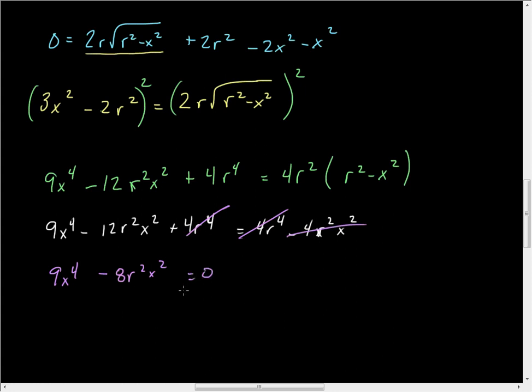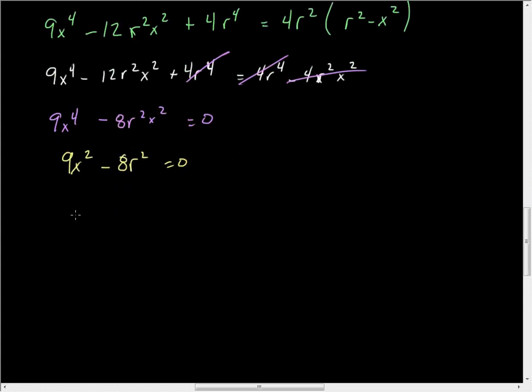Dividing through by X squared, because, again, X cannot be 0. So I get 9X squared minus 8R squared is equal to 0. It means that I have X squared is equal to 8R squared over 9, which yields X is equal to plus or minus. Well, X can't be minus. And so it's equal to the positive of the square root of that, which is 2R root 2 over 3. That's my X value.